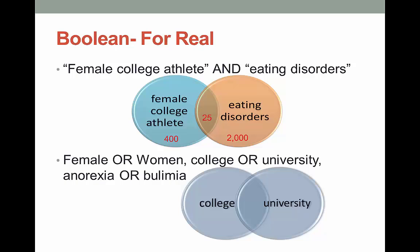Let's try an OR search — this will make your search bigger. Remember, these are good to use with similar terms. So: college or university. If you search on college or university, you're telling the catalog or database that you don't care which it brings back — either is fine. So if there are 2,000 articles with the term college and 2,000 with the term university, when you combine the two you're up to 4,000 because it actually adds them. It makes your search bigger.